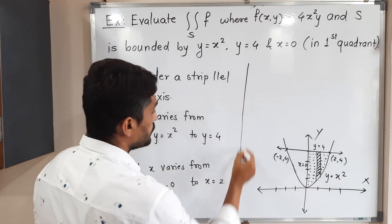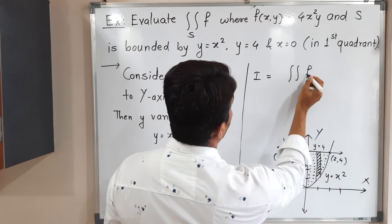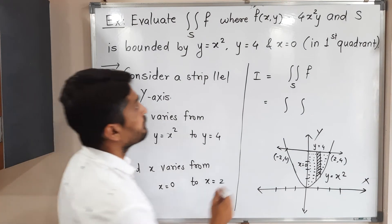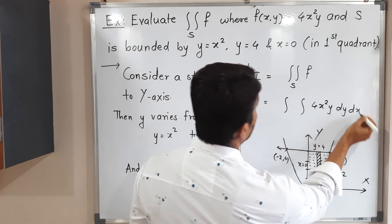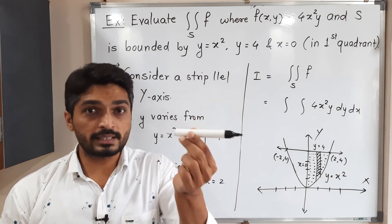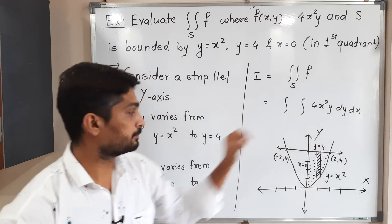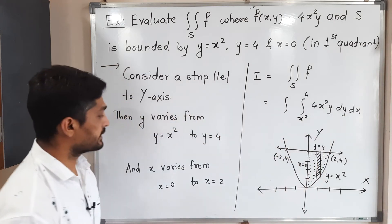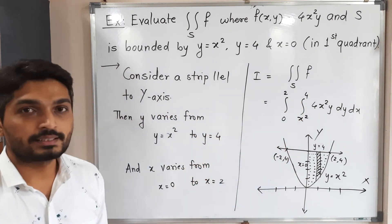In this way we got the limits of integration. So I equals the double integral of f over the region, where f is 4x²y. We write dy first then dx, since the strip is parallel to the y-axis. The limits of y are x² to 4, and the limits of x are 0 to 2.